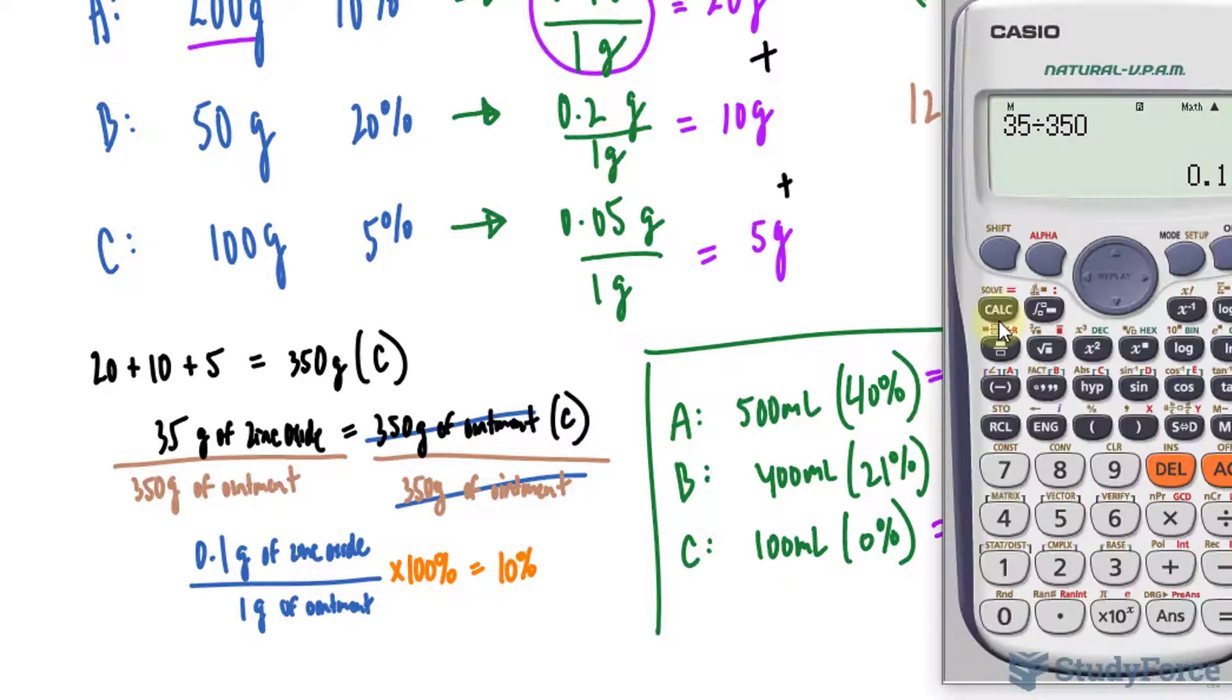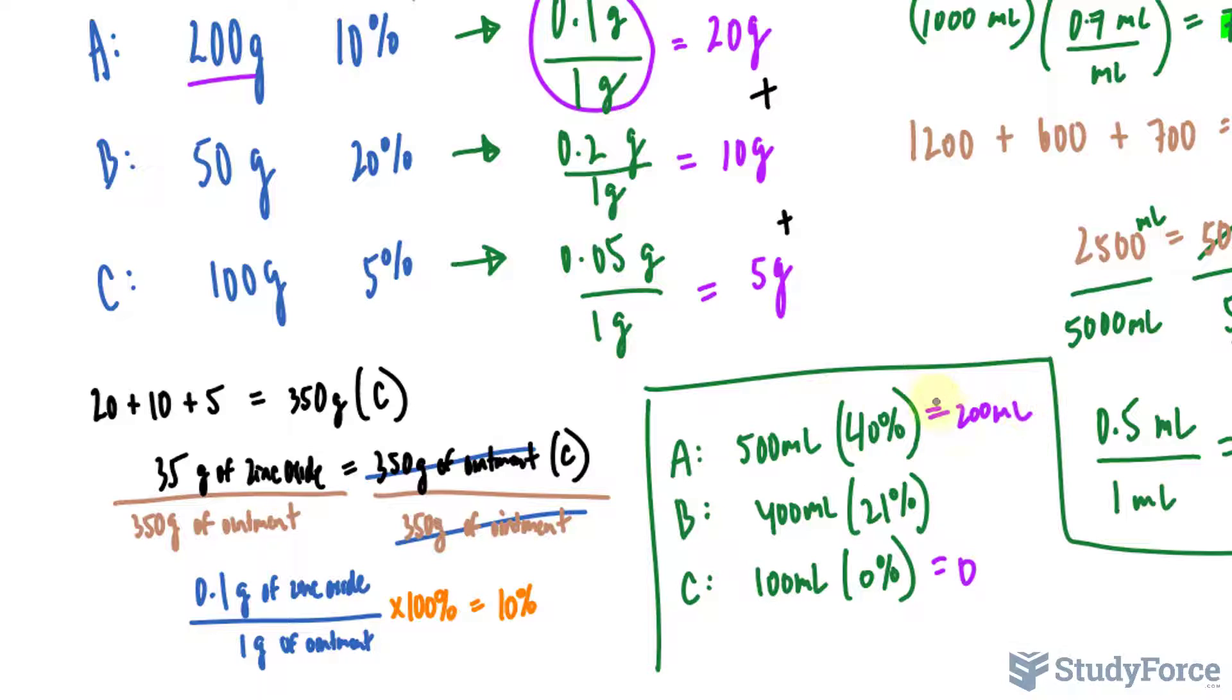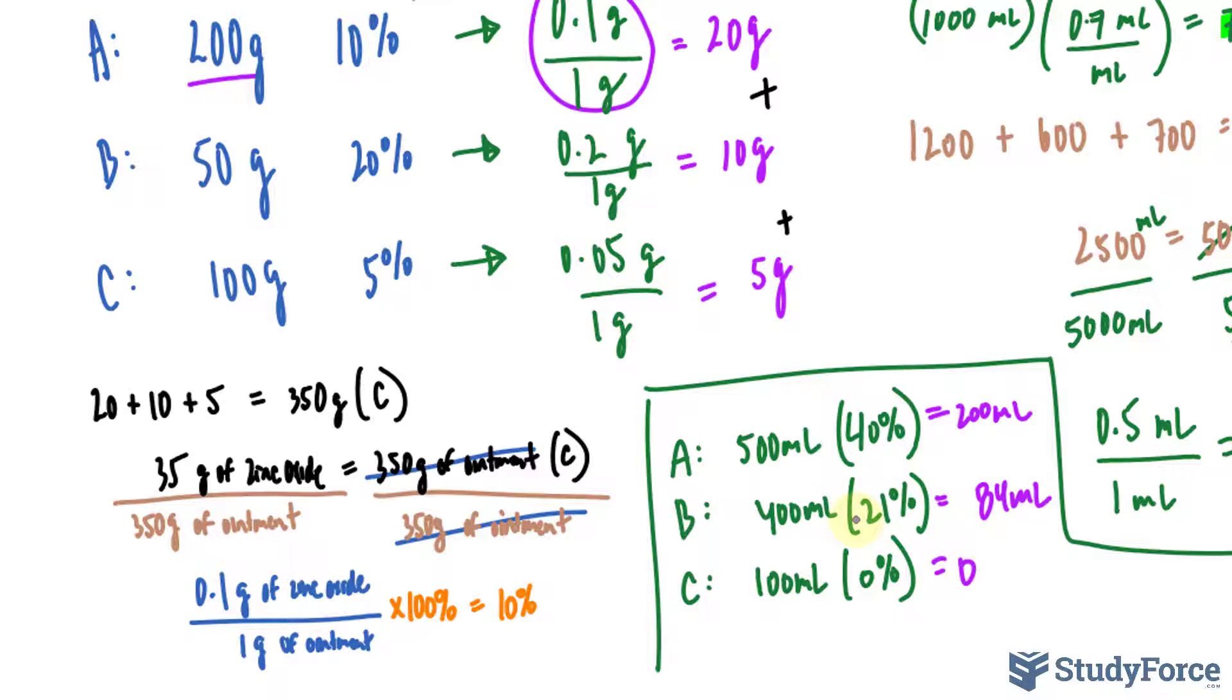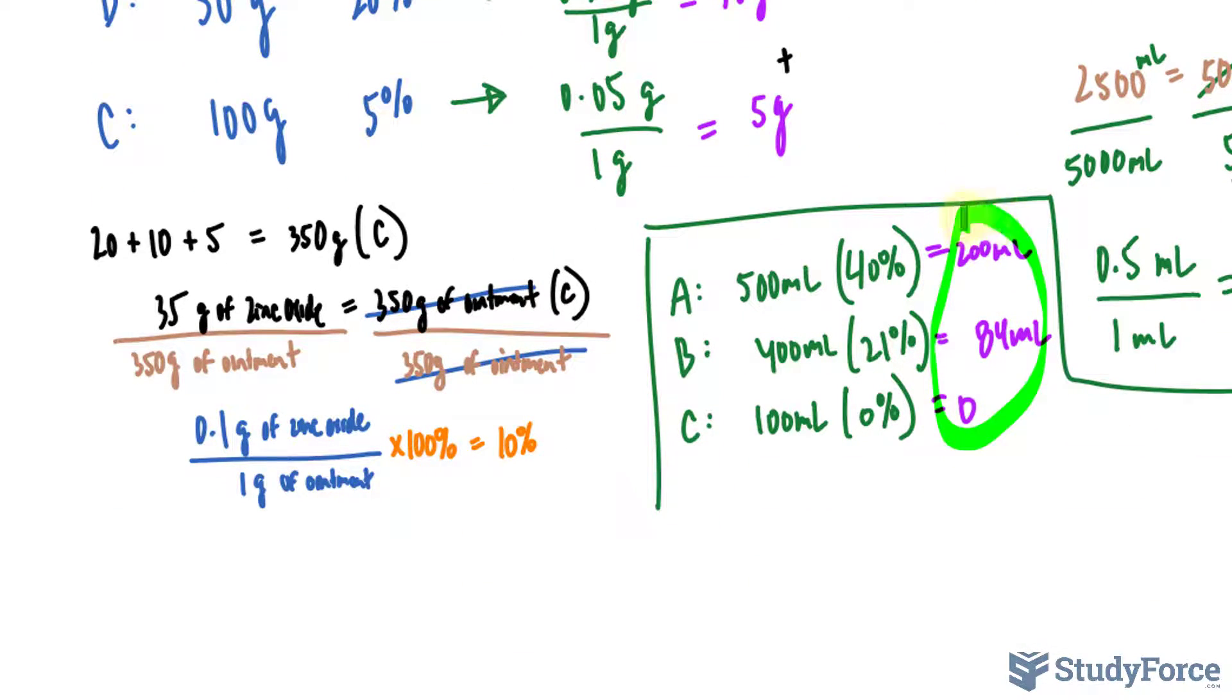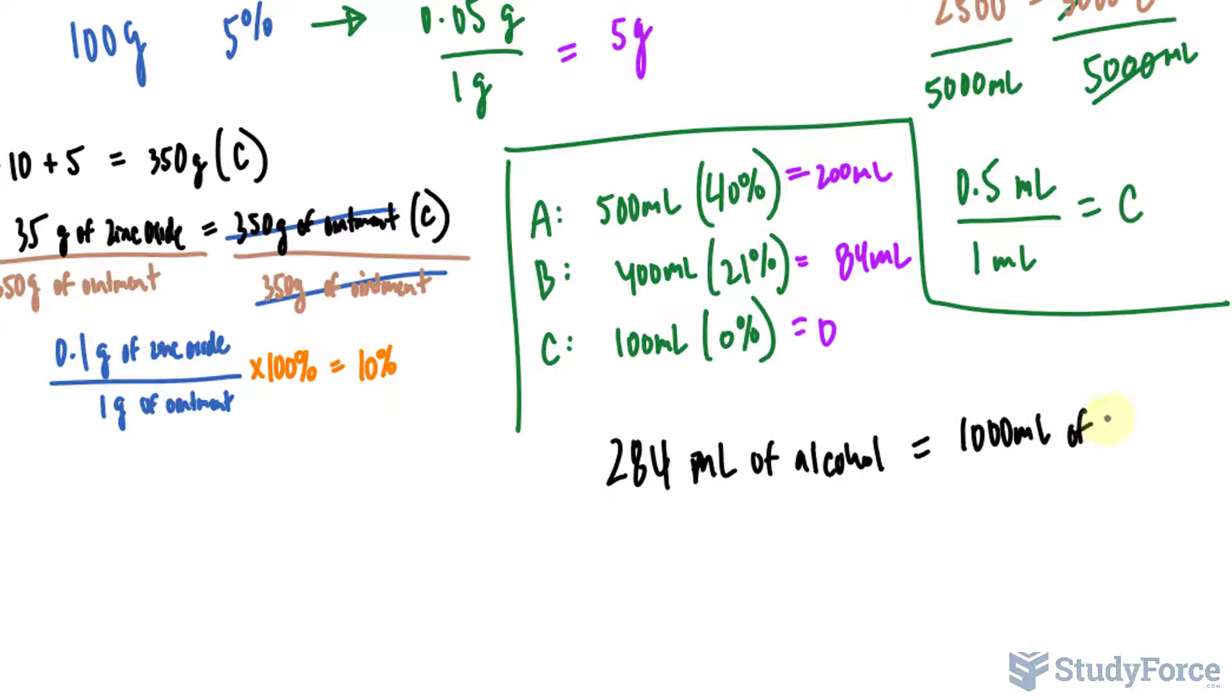Using our calculator, 500 times 0.4 makes 200. So there's 200 milliliters of alcohol within that part of the mixture. And multiplying 400 times 0.21 makes 84. So 84 milliliters of alcohol within that part of the mixture. And in this part of the mixture, there's 0% alcohol. I'll add up these three values, and we get 284 milliliters of alcohol is equal to 1,000 milliliters of the final solution. And we don't know its concentration, but remember, if you multiply the quantity times the concentration, you get the active ingredient. So I'll just write down C here, that's what we're looking for.